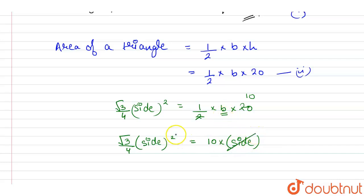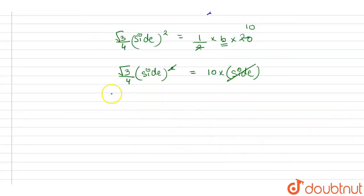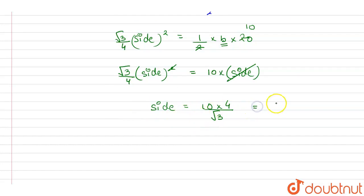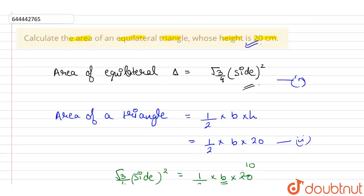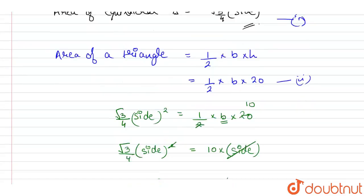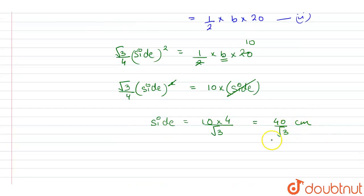Cancelling one side from both sides, the side will be equal to 10 multiplied by 4 divided by root 3. So the side works out to be 40 by root 3 centimeters, since the height was given in centimeters.